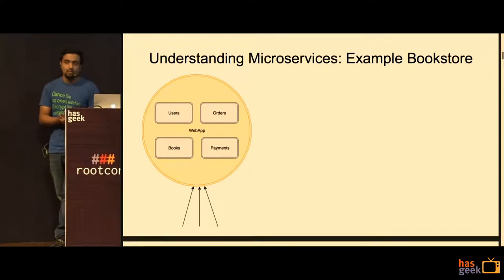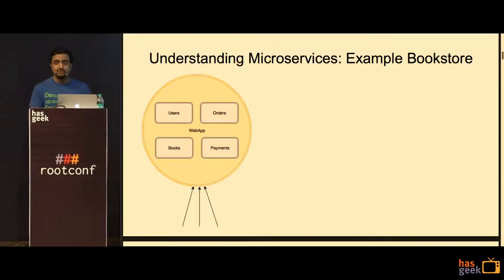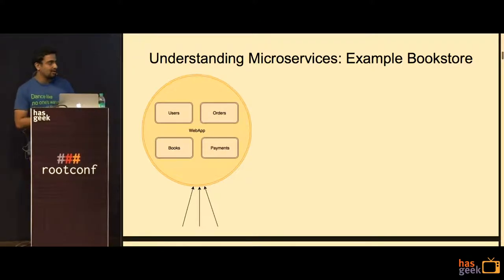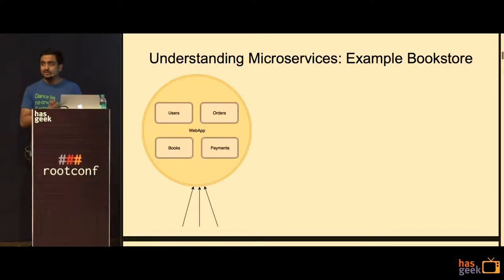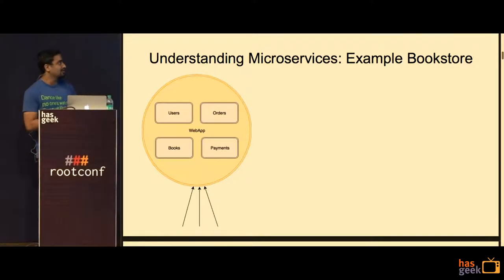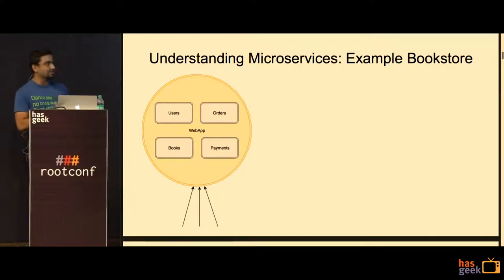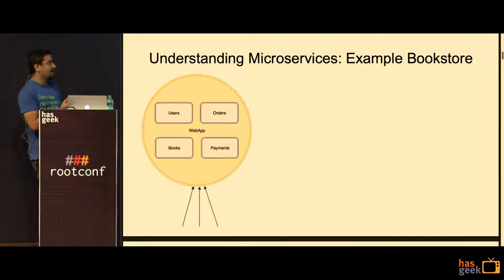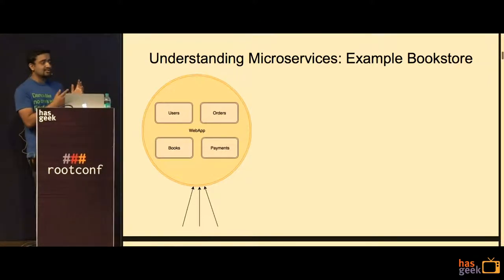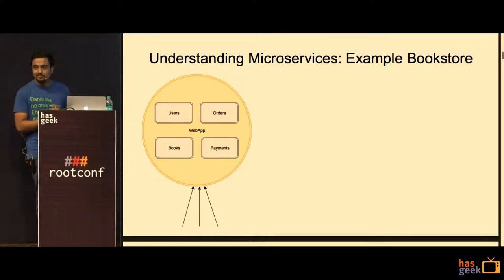Next: what is a microservice? I'll not go into depth explaining it — I'll take an example. Assume you have a bookstore e-commerce website, which is incidentally what Amazon started with. I took four components that could define your website: users, orders, books, and payments. How would you develop it in the first go? You would have everything running on your server, and all of these apps communicate to each other because they are on the same server — they don't need any specialized form of communication.